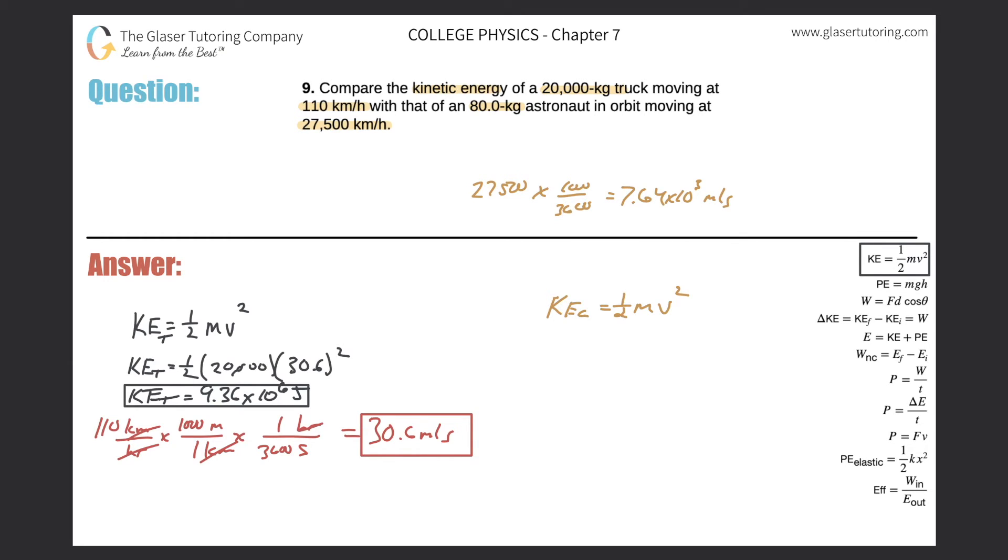Alright, now that's the value we're going to plug in. That's the value we're going to plug in for the velocity. So we have the kinetic energy, therefore, of the astronaut is equal to 1 half times the mass, which was 80, times then the velocity, 7.64 times 10 to the third.